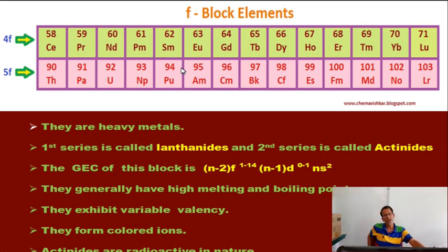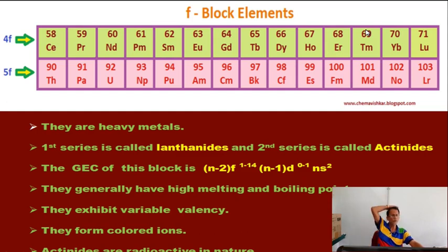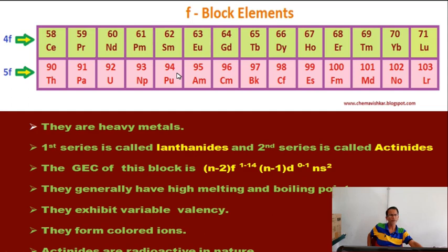F-block elements are so called because the last electron enters into the F sub-shell. They are divided into two series: the 4F series (Lanthanides) and the 5F series (Actinides). Lanthanides span cerium to lutetium — 14 elements. The members are: cerium, praseodymium, neodymium, promethium, samarium, europium, gadolinium, terbium, dysprosium, holmium, erbium, thulium, ytterbium, and lutetium. These are called Lanthanides.